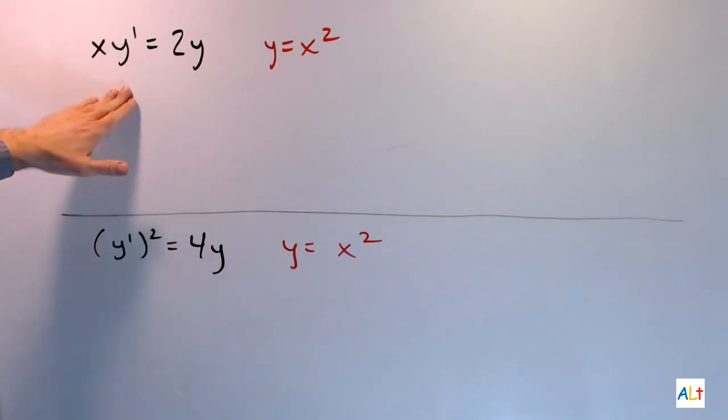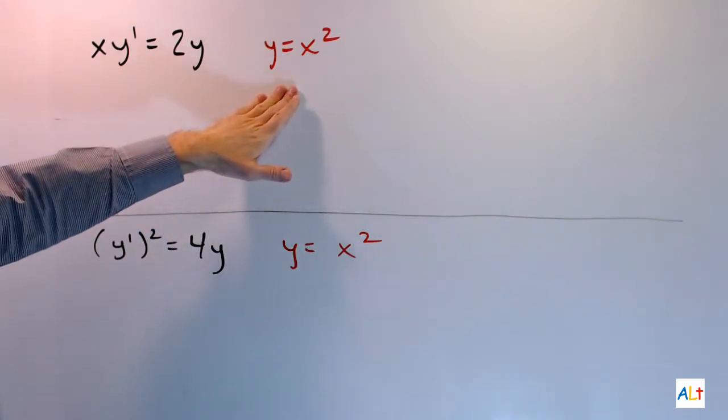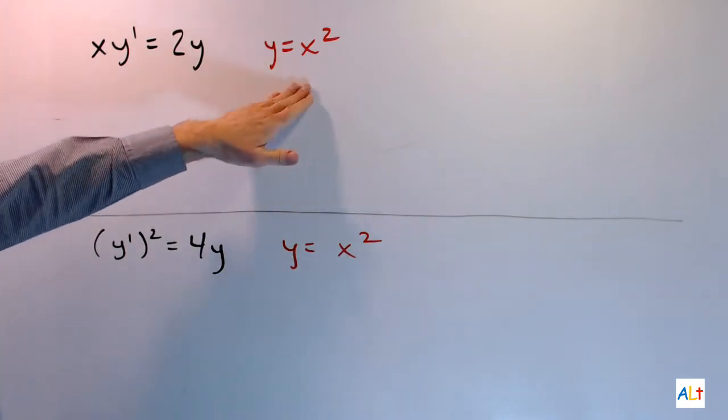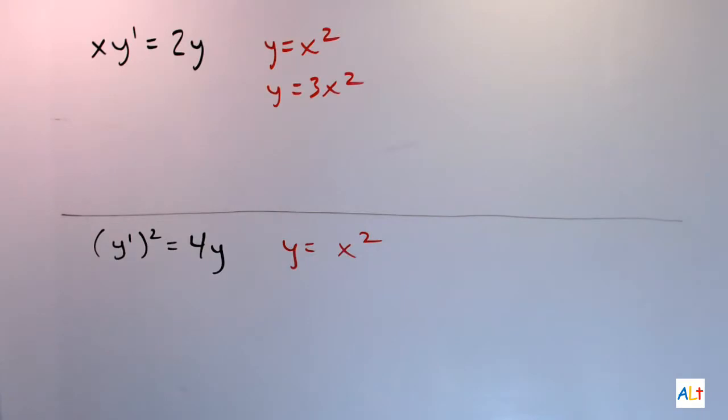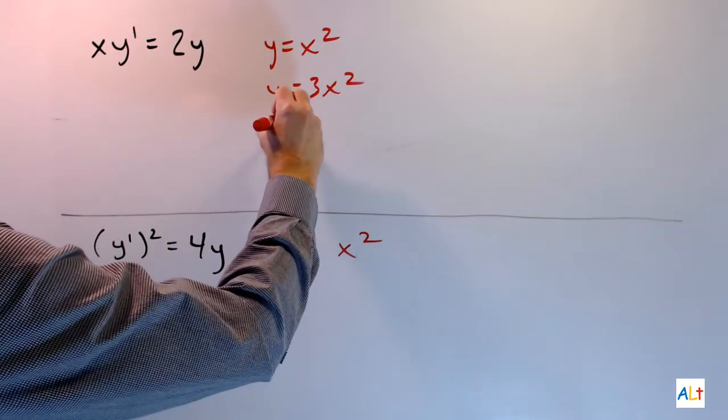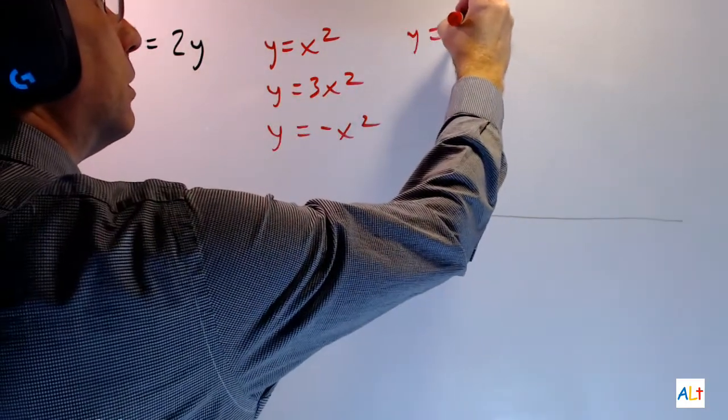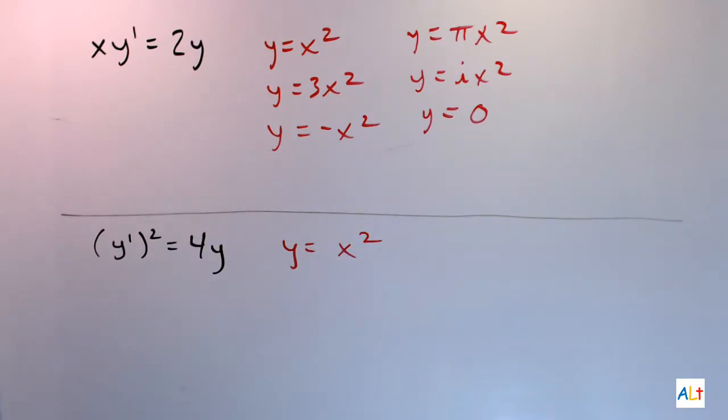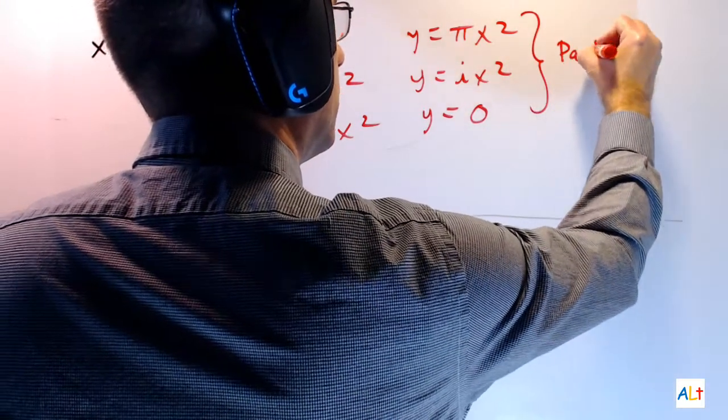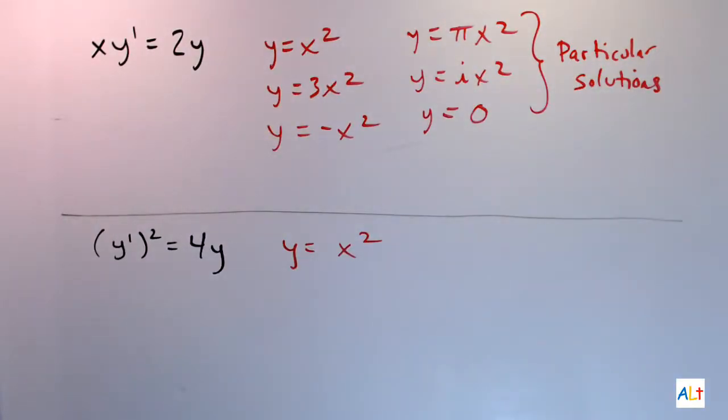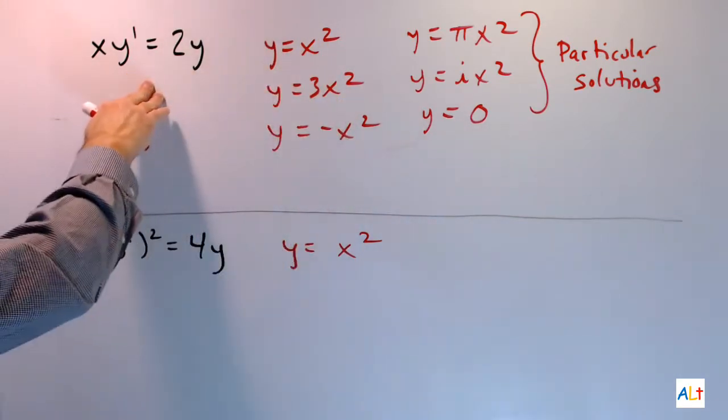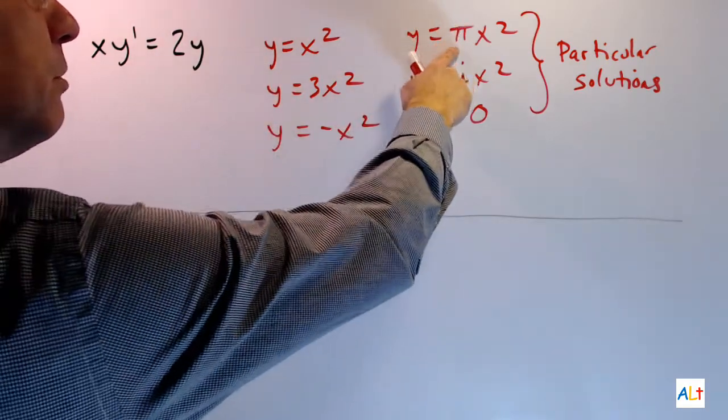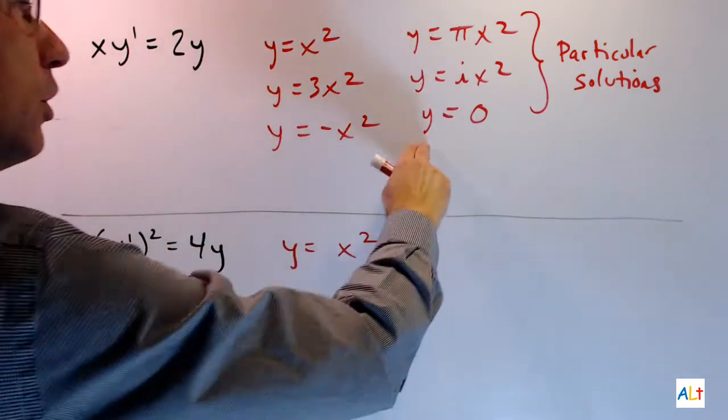Now it turns out that y equals x squared is not the only possible solution for this differential equation. Here's another solution. You can check for yourself, verify that that is indeed a solution. Here's another one. And there's more. Each and every one of those is a solution, and you can verify that for yourself easily enough. All of these are called particular solutions. And there is an infinite number of them. In fact, any function at all that's in the form of a constant times x squared will be a solution to this equation. The constant could be anything. It could be negative, it could be irrational, it could be imaginary, and then y equals 0 is also a solution.